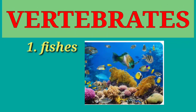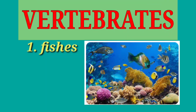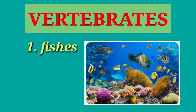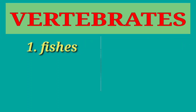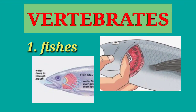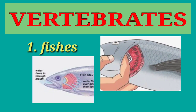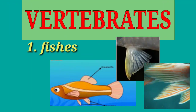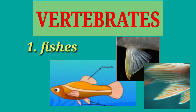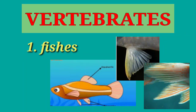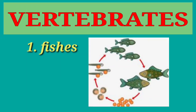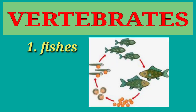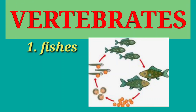Fishes are animals with backbones. They live in water and take dissolved air and food from their surroundings. They have gills for breathing. The body of a fish is covered with scales, and it has fins to help it move and keep its balance. Fishes reproduce sexually; their eggs are fertilized and developed outside their body, and the young take care of themselves.